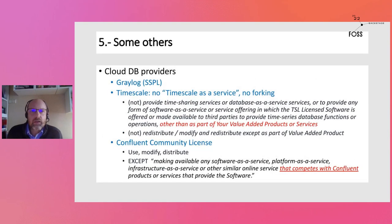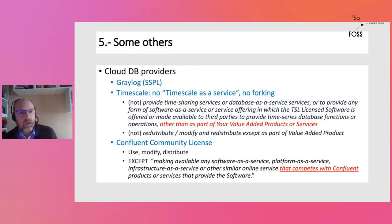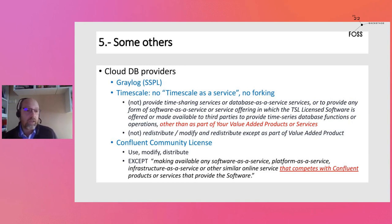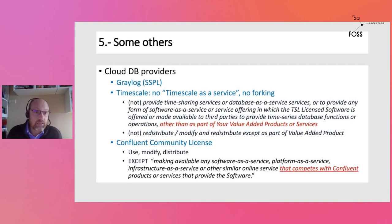There are other cloud databases and cloud services using these approaches. Graylog uses the SSPL. Timescale is similar to Elastic — basically you can't sell Timescale as a service. Confluent has a non-compete, which is a bit strange: you can access the code, use it, distribute it, but you can't provide it as software as a service to third parties because that goes against the Confluent business model, which is to sell Confluent as a platform service. Here it has expressly a non-compete clause: don't compete with Confluent.